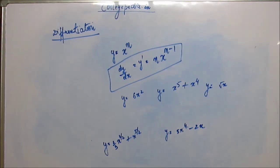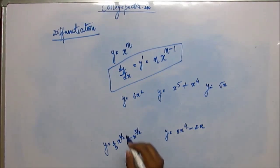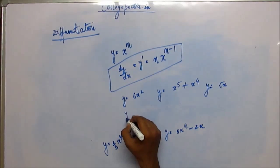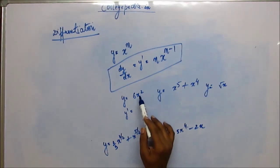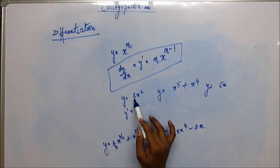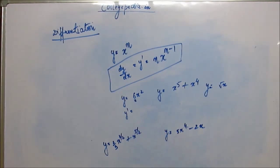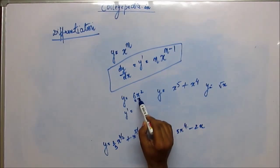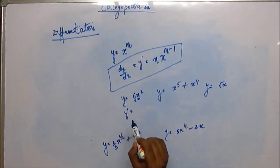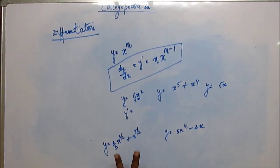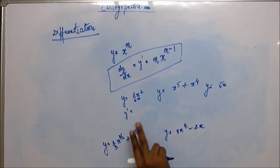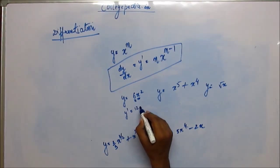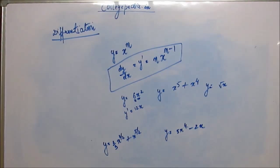I hope you've done it. Let's go through the answers. For y = 6x²: the constant 6 remains as it is, the power 2 comes down and is multiplied by 6, giving 12, and the power of x is reduced by 1. So dy/dx = 12x.